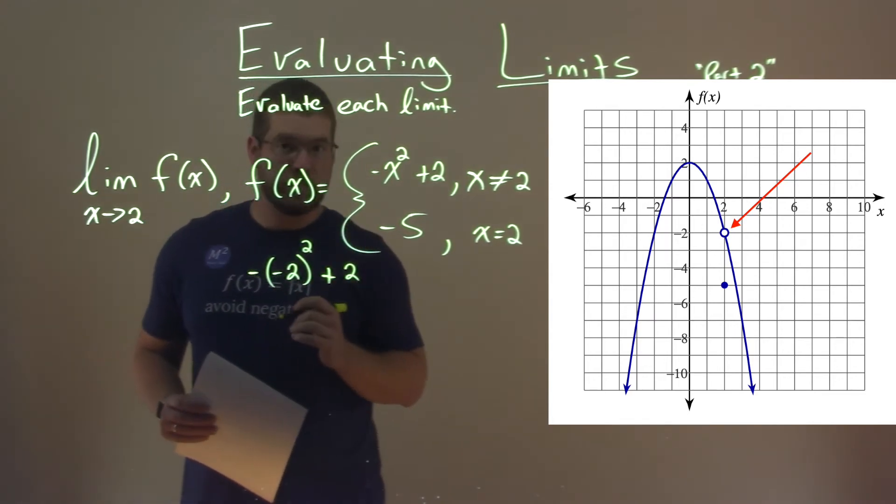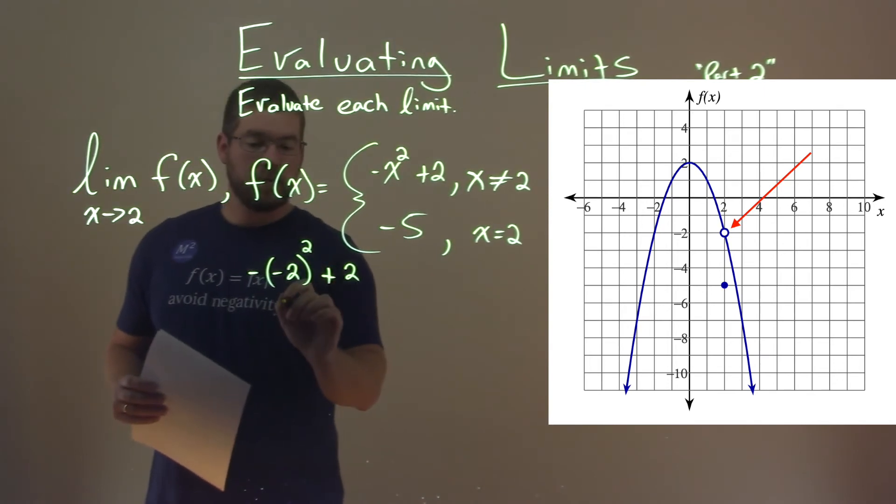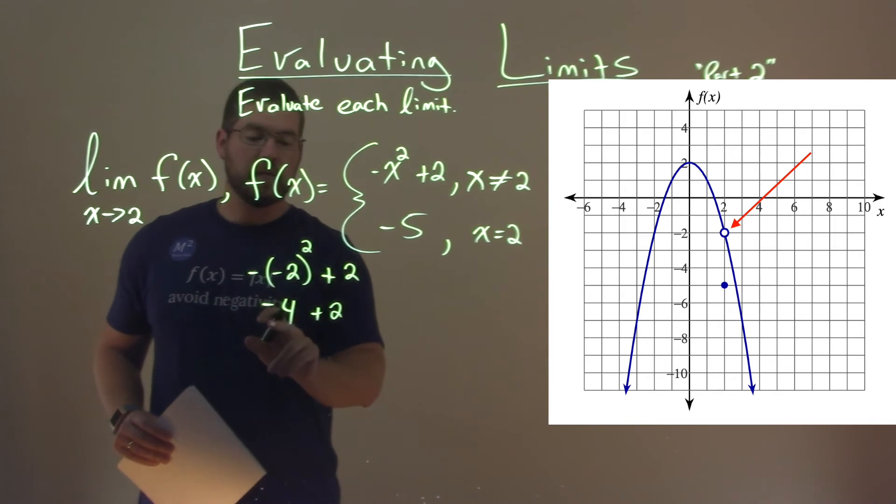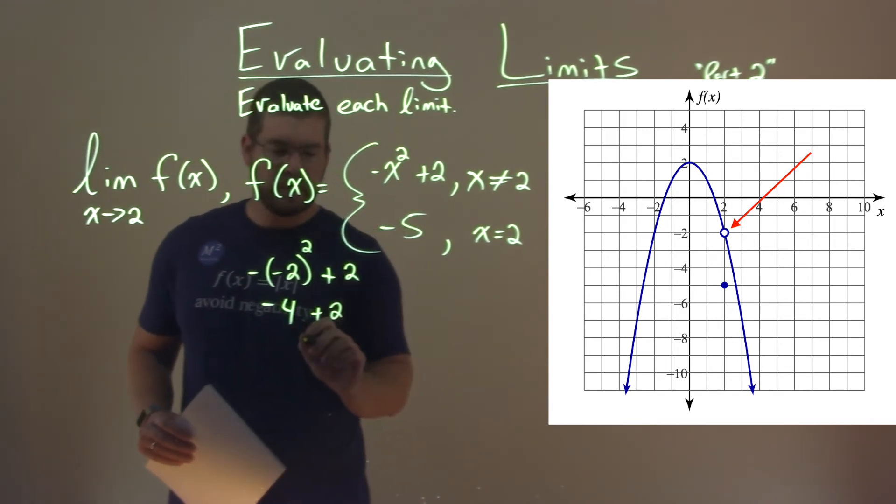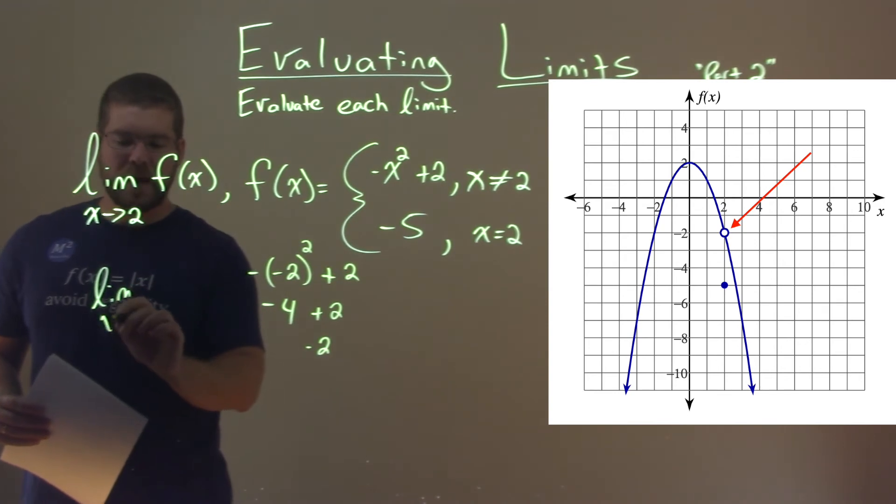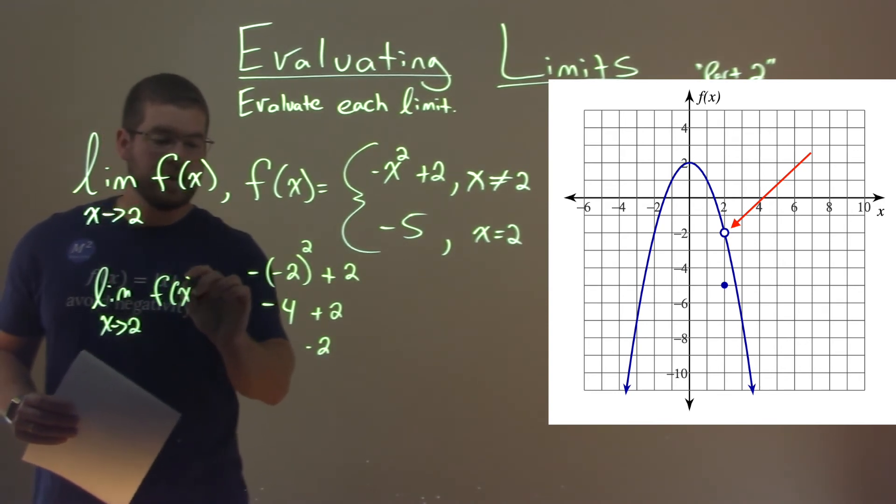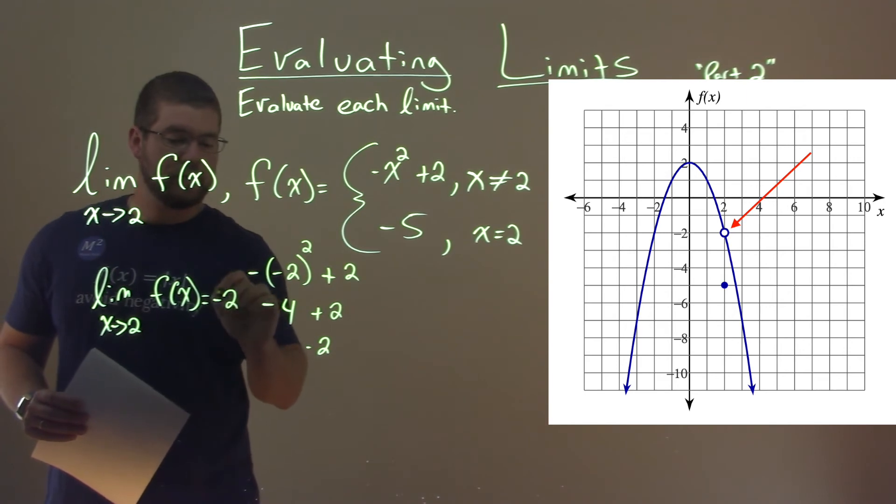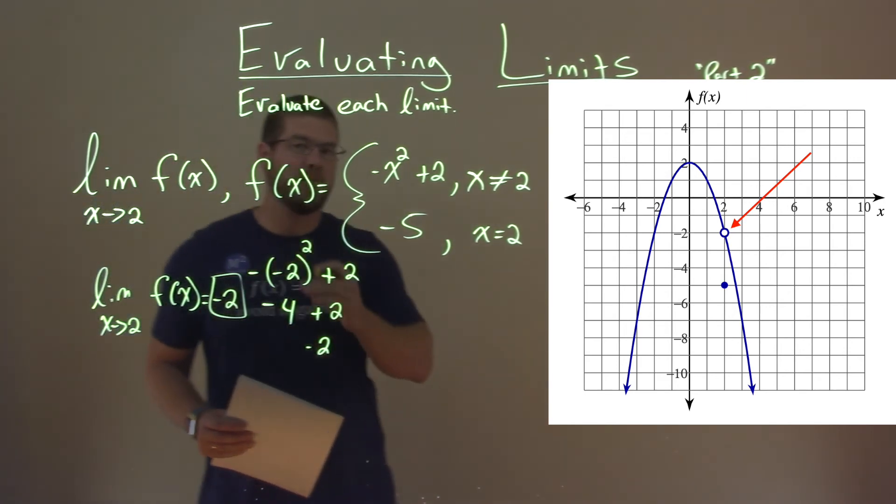Then we simplify this. Negative 2 squared is a positive 4, but don't forget the negative that's out front, plus 2. Negative 4 plus 2 is a negative 2. And so we would say that this limit as x approaches 2 of f of x is equal to a negative 2, and that is our final answer.